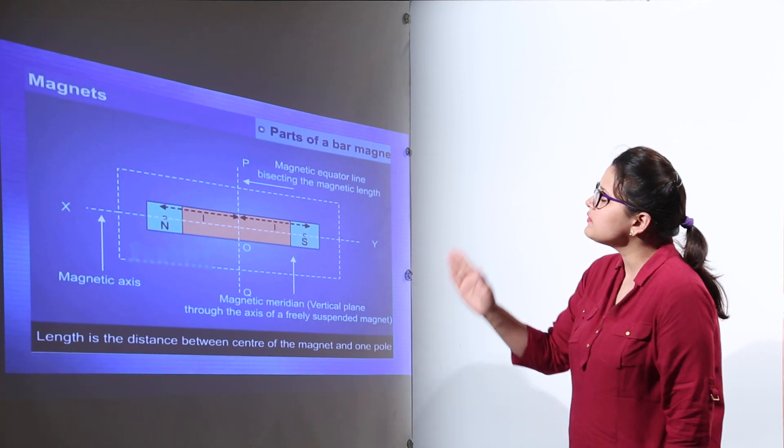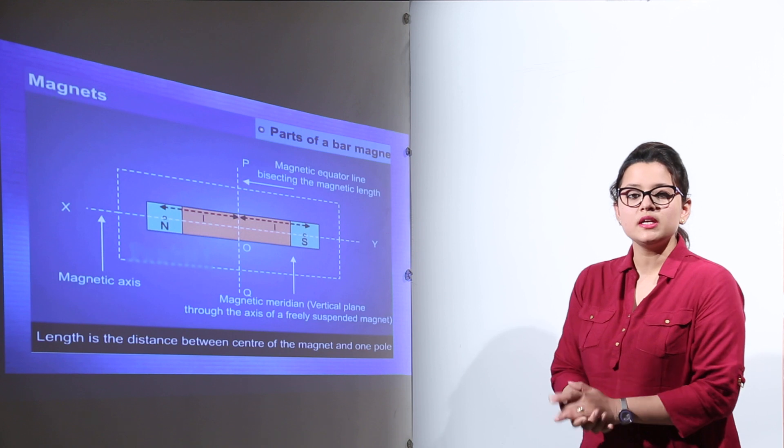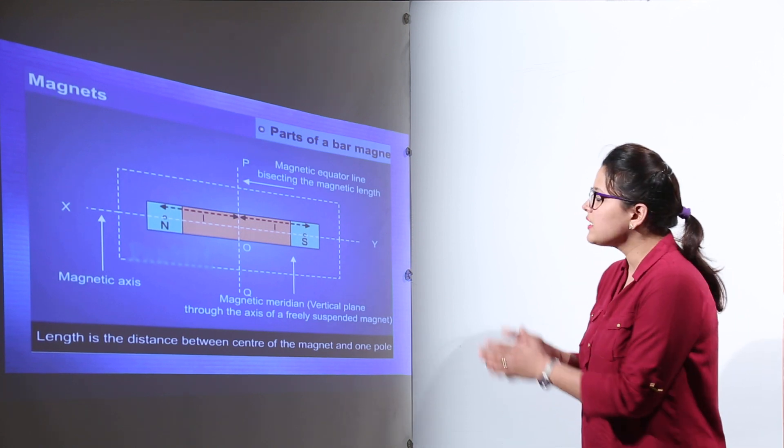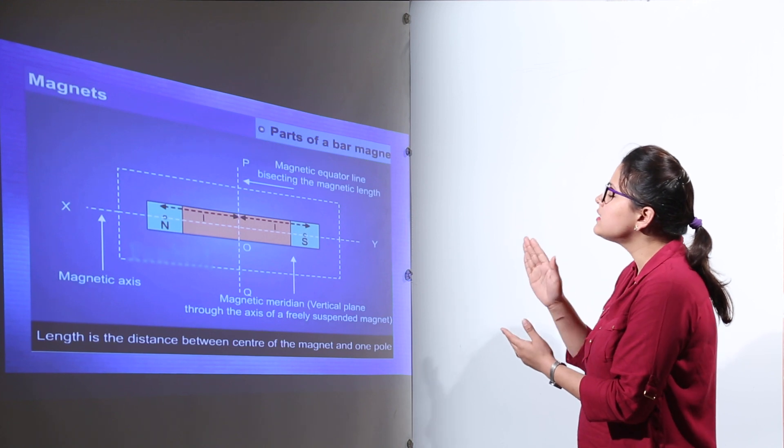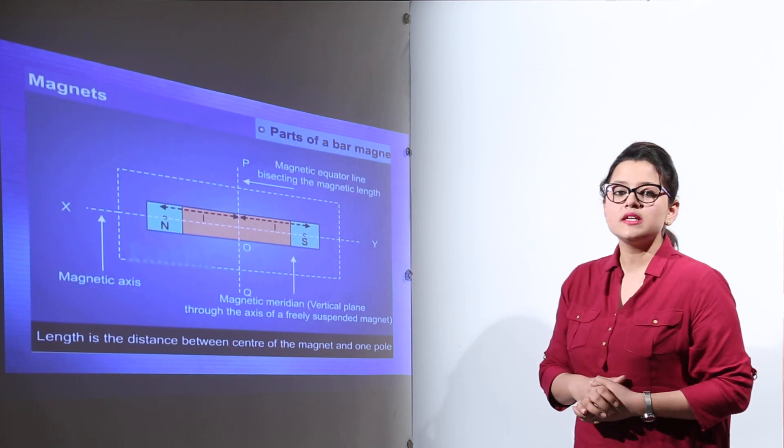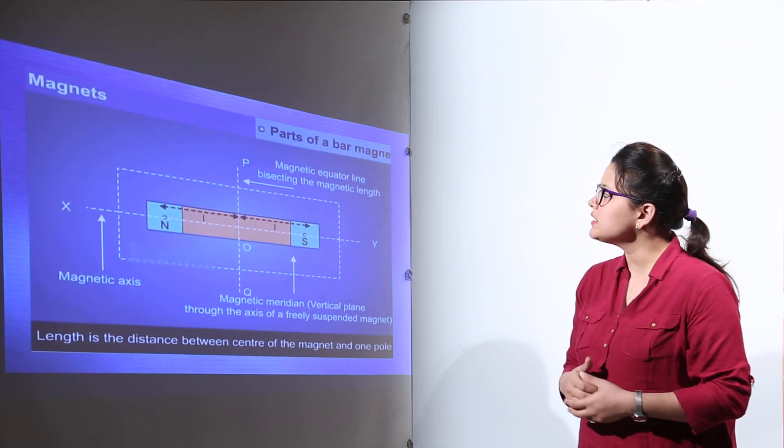So the distance between the center of the magnet and north pole is also the length of the magnet, as well as the distance between the center of the magnet and the south pole of the magnet is again the length of this magnet.